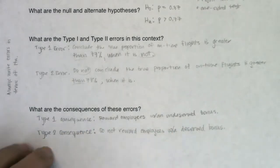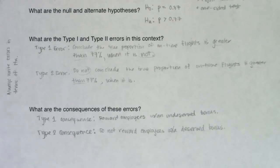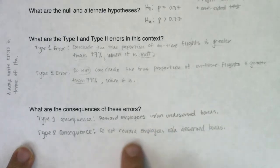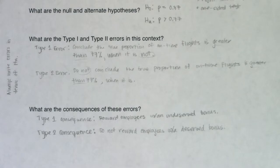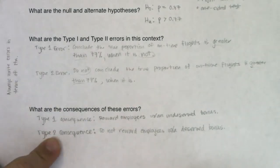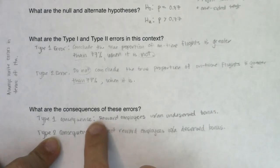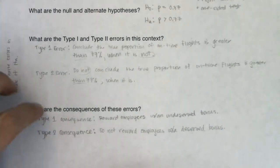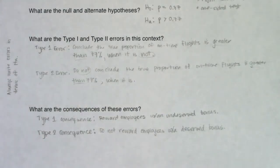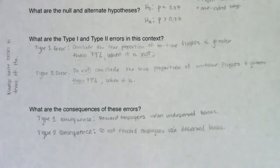Which consequence is worse? If you're an employee, the Type 2 error is worse — you earned your bonus and didn't get it. If you're the airline CEO, the Type 1 error is worse — you don't want to give out money they didn't earn. In this case it really depends on which side of the coin you're on: employee or owner. On the next problem it'll be more clear which error is worse.